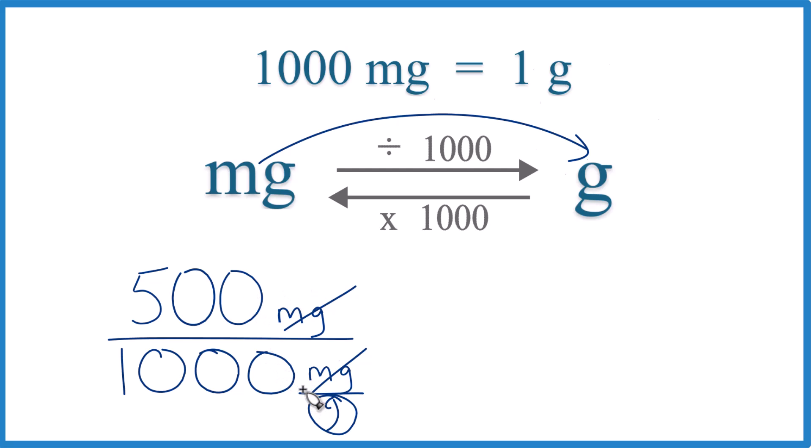So let's move the decimal point 1, 2, 3. So now we're just dividing by 1, and then 1, 2, 3. And we get kind of what we expected, 500 milligrams. That equals 0.5 grams.